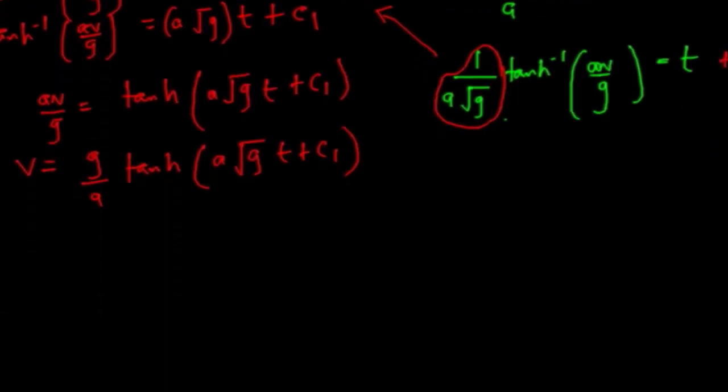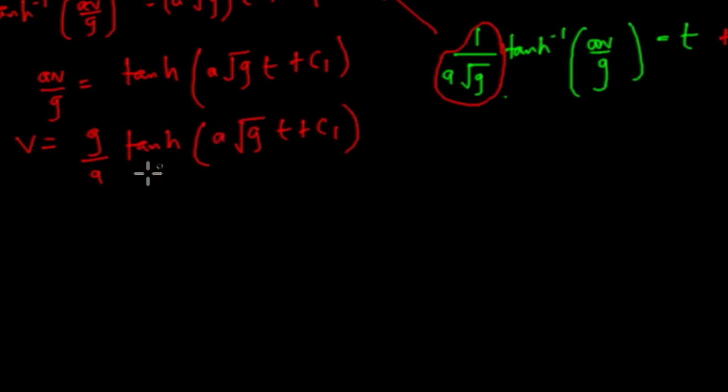So I'm going to put that back here. So when we put that back, so since a equals square root of k over m here, we're going to have v to be the root of mg over k tan hyperbolic of root of kg over m times t plus c1.